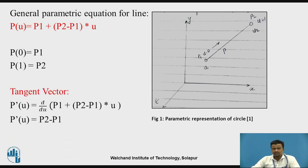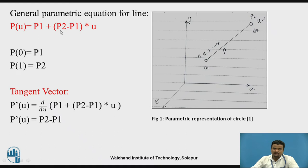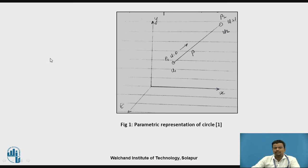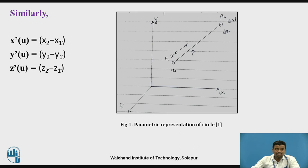Tangent vector: take d/du of the equation p(u) = p1 + (p2 minus p1)·u. So d/du gives (p2 minus p1), which is the tangent vector. Therefore p'(u) = p2 minus p1. In component form: x'(u) = x2 minus x1, y'(u) = y2 minus y1, and z'(u) = z2 minus z1.